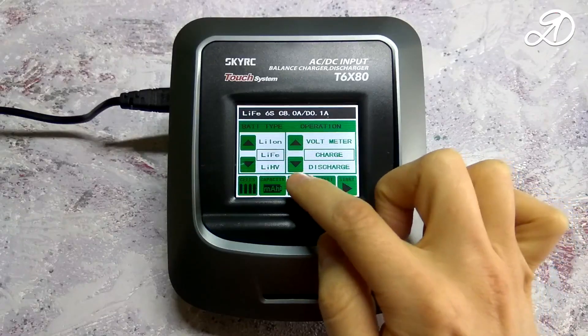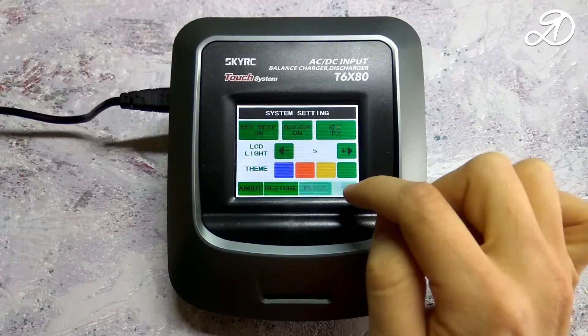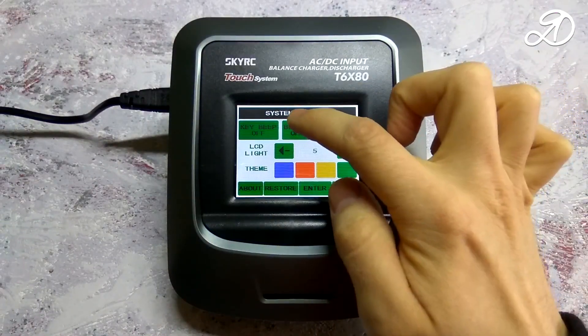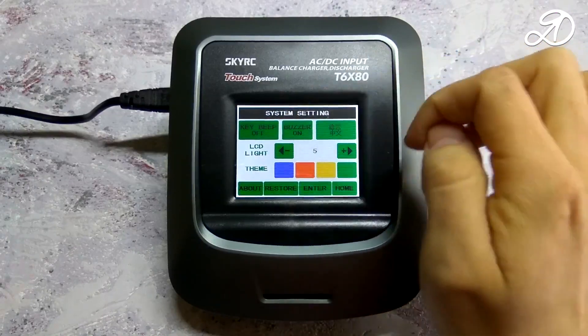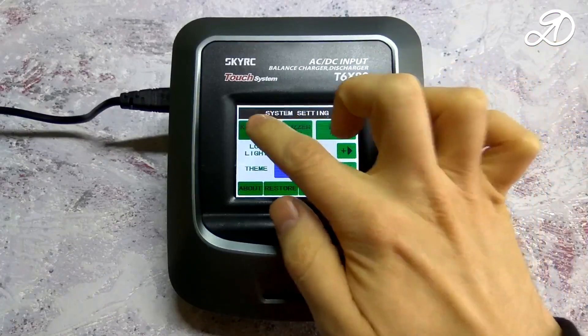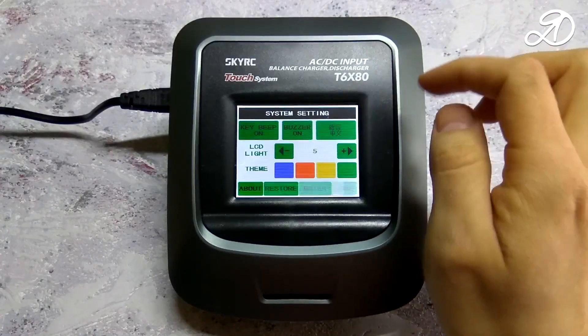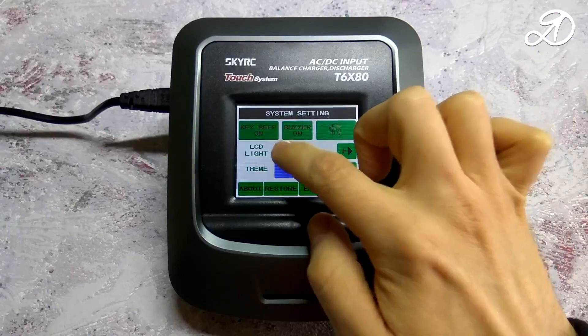Let's look at the system settings. Here you can activate the sound when you click, activate the signal when messages are displayed or the mode is changed, switch the language, and change the display brightness.